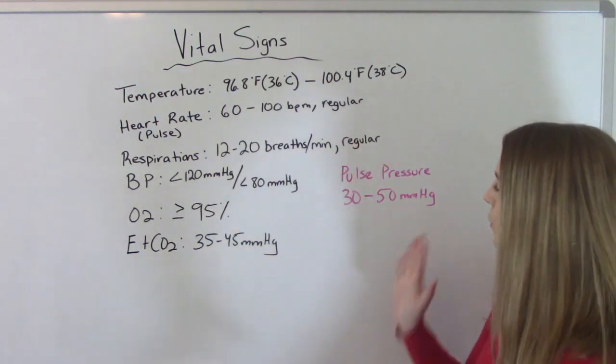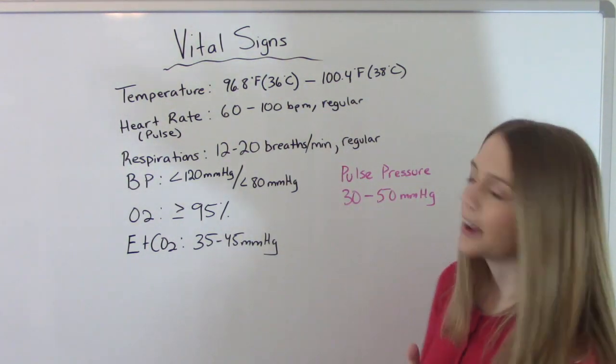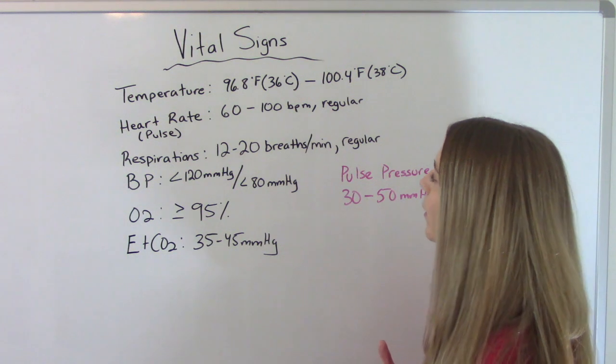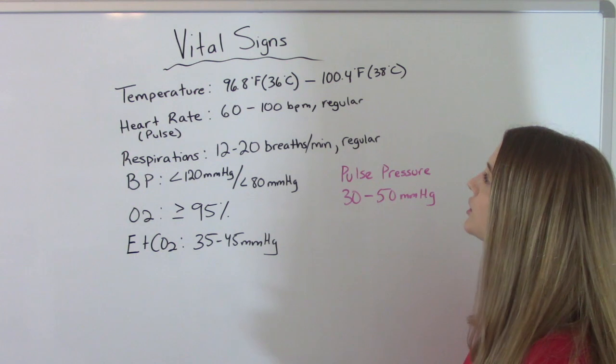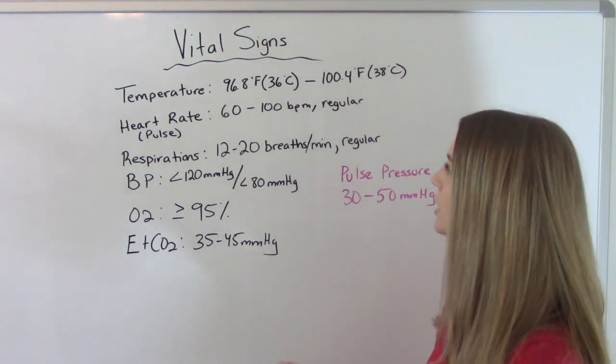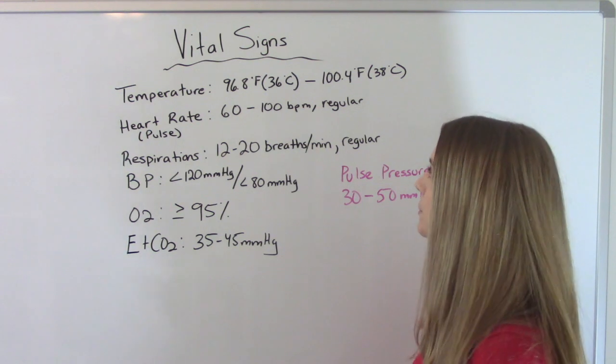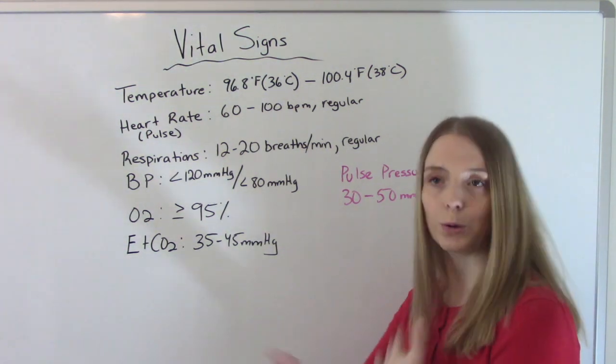So let's talk about the normal ranges first. If you're using a Fahrenheit scale, it's 96.8 to 100.4. And if you're going in Celsius, it's 36 to 38. Your pulse should be 60 to 100 beats per minute and it should be described as regular as opposed to irregular.